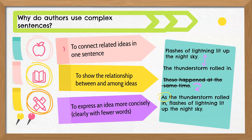Another reason that writers use complex sentences is to help them express an idea more concisely — clearly and with fewer words. This is helpful for avoiding long, awkward sentences that can make our writing more confusing. Look at our example. We have two independent clauses: flashes of lightning lit up the night sky, and the thunderstorm rolled in. In order to show how these ideas are related, we could write another sentence — these happened at the same time — but that's awkward. Instead, let's create a complex sentence: as the thunderstorm rolled in, flashes of lightning lit up the night sky. We use the subordinating conjunction as to connect the sentences, show the relationship between the two ideas, and express the idea more concisely.